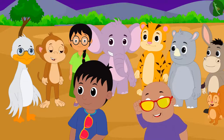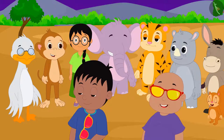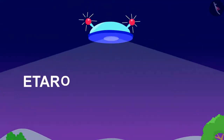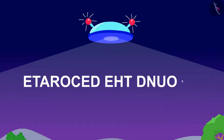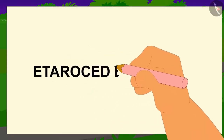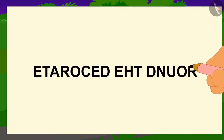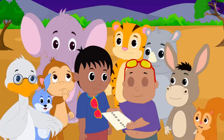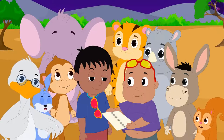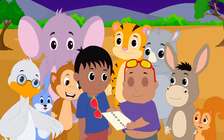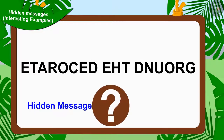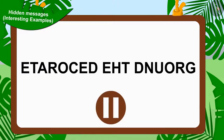Bablu looked at the sky with his unique glasses and saw the next hidden message there. Bablu immediately wrote this message on a paper and read it to all the villagers. All the villagers once again started solving Jeev's hidden message. Children, can you solve this hidden message? If you want, you can find the answer by stopping the video.